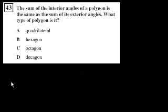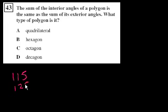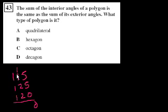In the example we just did for that triangle, the exterior angles were 115, 125, and 120. Adding them up: 5 plus 5 is 10, and that gives 360 degrees — even for a triangle with non-standard angles, not an equilateral triangle.